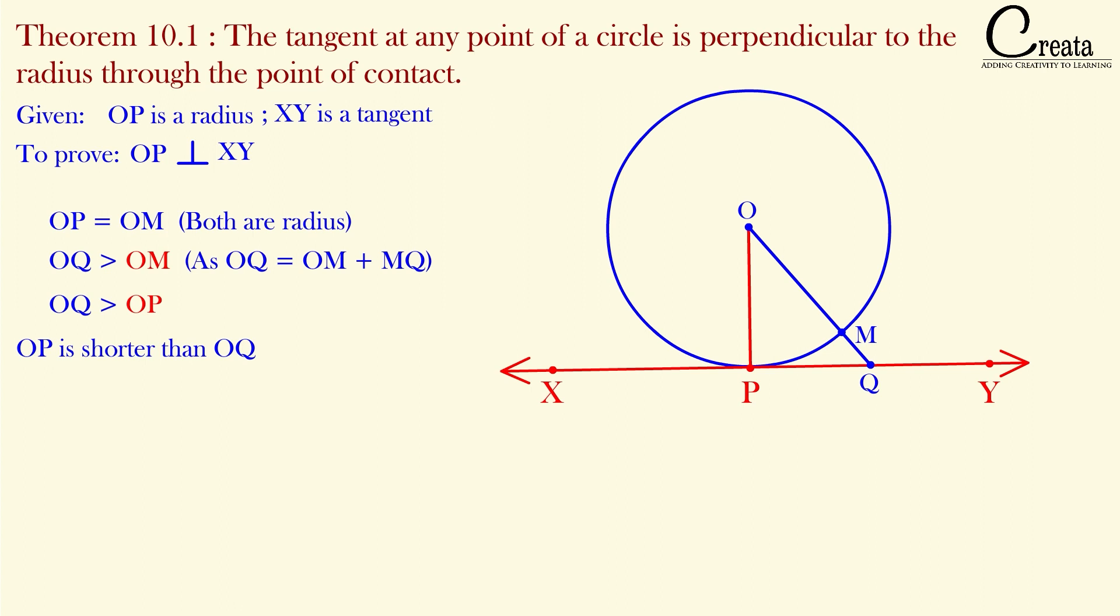Similarly, you can take point Q anywhere on this tangent XY. All distances will be larger than the line segment OP or radius OP. You can take it anywhere. All these distances OQ will be larger than OP. So we can conclude that OP is the shortest of all distances.